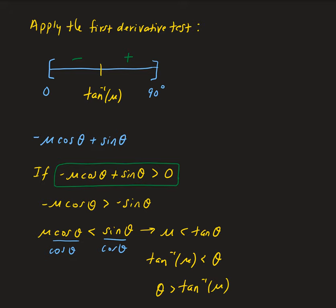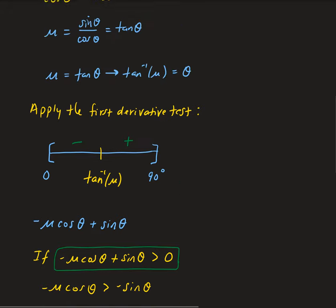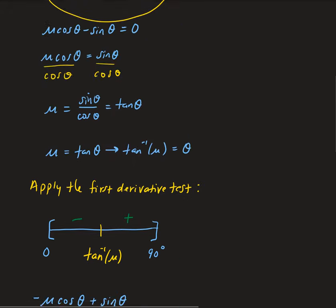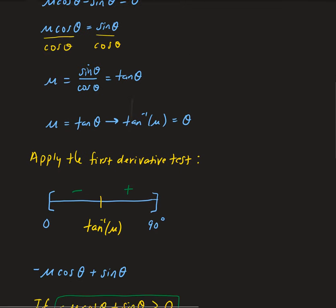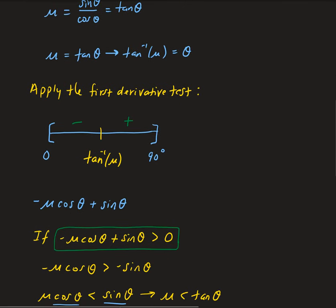So the derivative is negative when theta is less than arctan(mu), meaning the force function is decreasing between zero and arctan(mu), and increasing between arctan(mu) and 90 degrees.